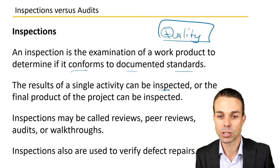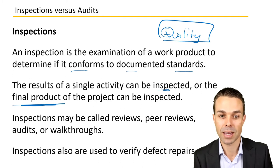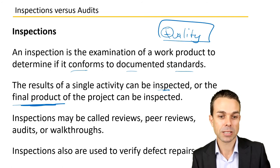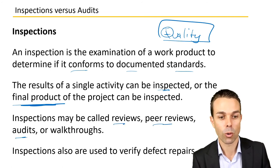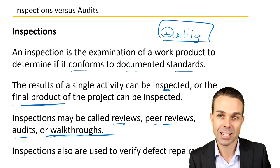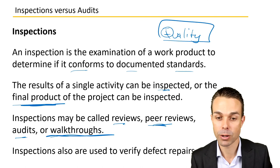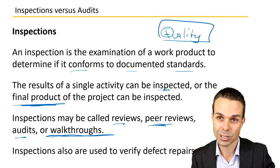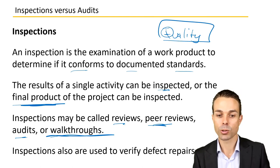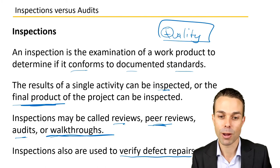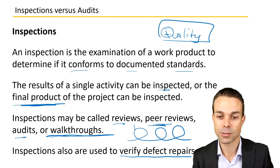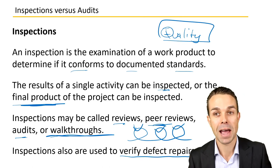The results of a single activity can be inspected, or the final overall product that we're delivering can be inspected. Now inspections might also be called reviews, peer reviews, audits, or walkthroughs. Especially in an agile sense you might have a walkthrough, a peer review, a demonstration, or a review to your product owner or to the customer. Inspections are also used to verify defect repairs — if we're fixing something, we will need to inspect it once fixed to make sure we're happy to proceed.